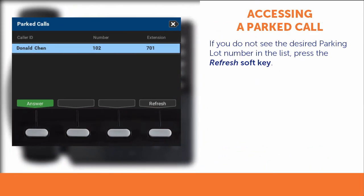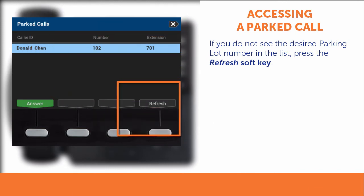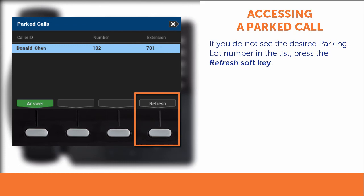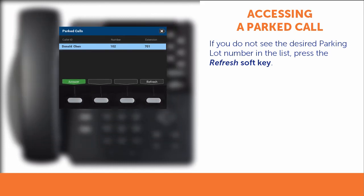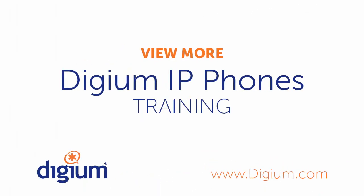If you do not see the parking lot number in the list, you may have to press the Refresh soft key to display all current parked calls. Thank you for watching the Digium IP Phone Training Series, How to Park a Call video.